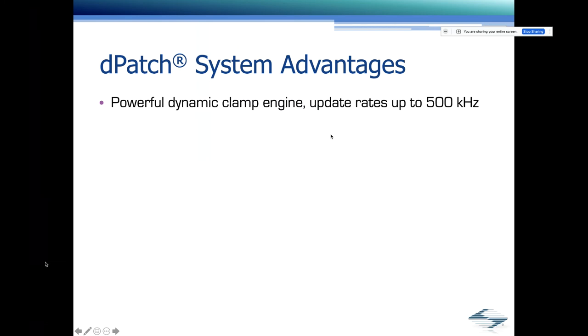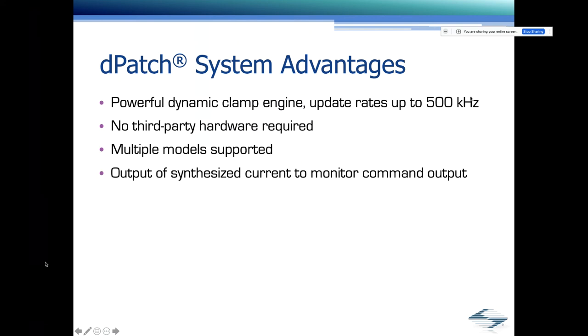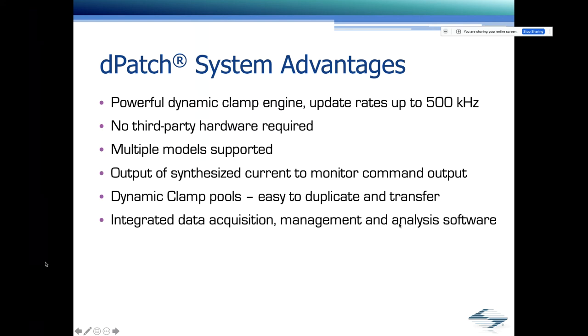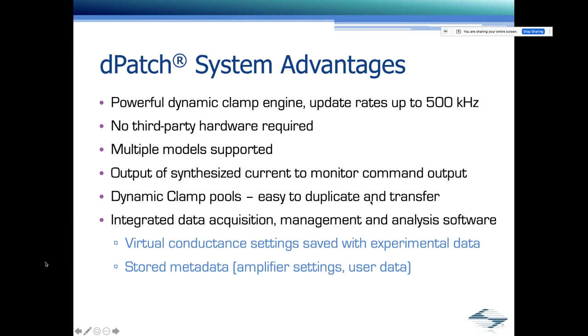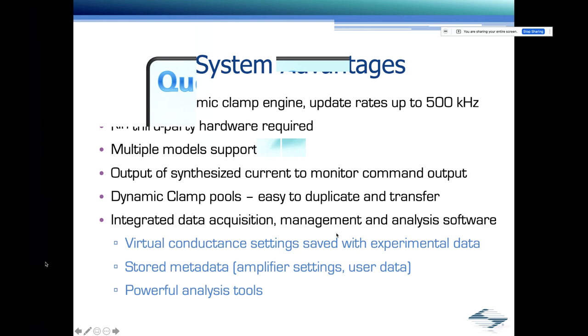So what we have here is our inactivating step. And then at the end of the step, the intervals between the step and our test pulse increase. And here again, I show in real-time the recovery. Let me briefly summarize the advantages of the DPATCH system. We have a powerful dynamic clamp engine with update rates of up to 500 kHz. You do not require any third-party hardware for that. That is a big advantage over other systems available. We have multiple conductance models that are supported. The synthesized current can be monitored, as I just showed you. And that can also be used for assay development. And we have dynamic clamp pools. The data acquisition management and analysis software is integrated and included with the DPATCH. The conductance settings are saved with the experimental data. Metadata. And there's powerful analysis tools available. And with that, let's switch to the question and answer session.